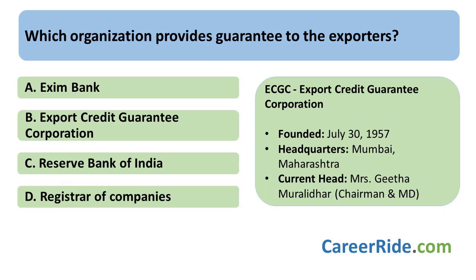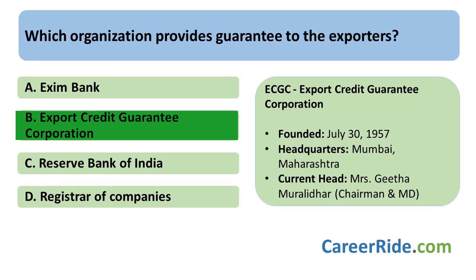Which organization provides guarantee to exporters? The answer is B — Export Credit Guarantee Corporation (ECGC). ECGC of India was established on July 30, 1957, with an objective to provide insurance cover with respect to the risk in export trade. Initially, it was set up as Export Risk Insurance Corporation in July 1957. Later, it was transformed into ECGC — Export Credit and Guarantee Corporation — in the year 1983. The headquarters of ECGC are in Mumbai, and the current chairman and MD is Mrs. Geeta Murlidhar.